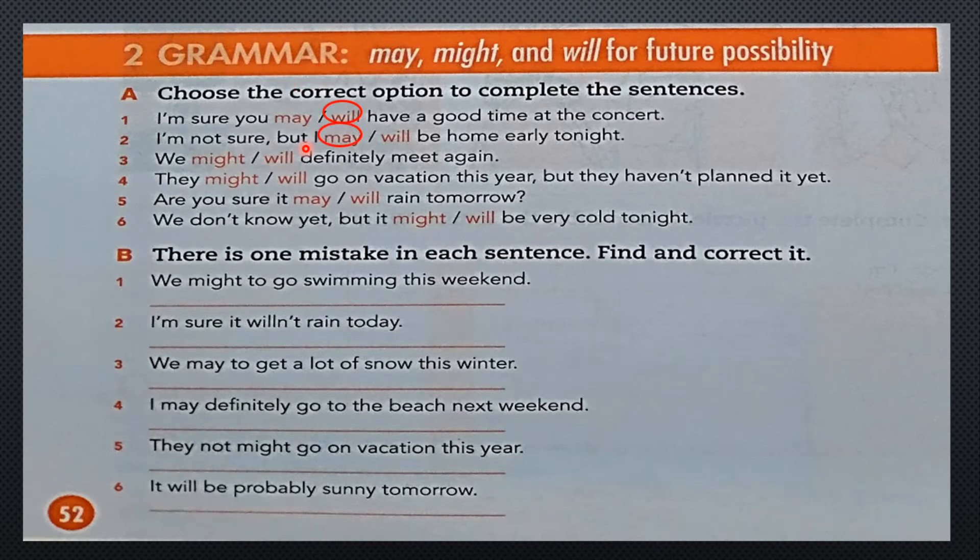Number two says I'm not sure. In that case, the correct answer is may, because he's not sure. Number three, they may or might go on vacation this year. In that case use will. Number four, what is the correct answer? They might go on vacation this year, but they haven't planned it yet. What happened with number five? Are you sure it may or will rain tomorrow? In that case, when it says are you sure, you have to use will. What happened with number six? We don't know yet, but it might or will be cold tonight. In that case, what is the correct answer for this part? That is might.